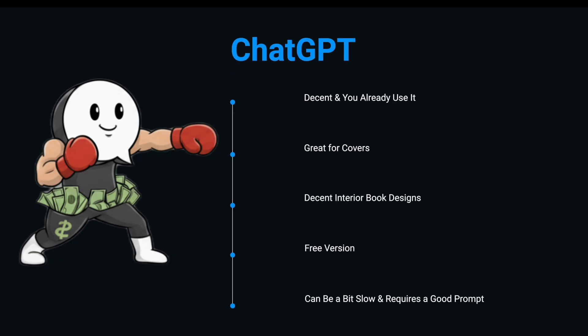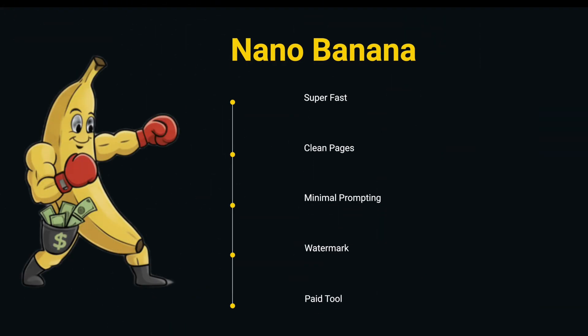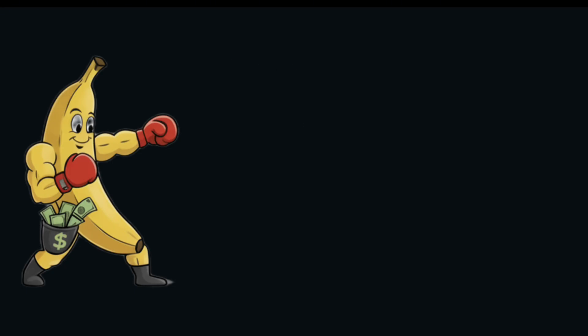Here's my take: ChatGPT is pretty decent and you already have it. It's great for covers and decent for insides too — free or cheap depending on your version — but a little slower and requires a refined prompt. NanoBanana was super fast, pretty clean pages with minimal pixelating, and minimal prompting required, though it had some refinement issues and trouble remembering instructions, plus it has a watermark and is a paid tool. I think you can use either for a digital download or a KDP coloring book, and then turn the final book into a real product to sell on Amazon KDP or as a digital product on Etsy.